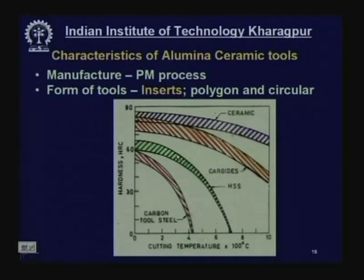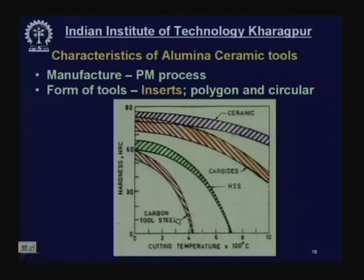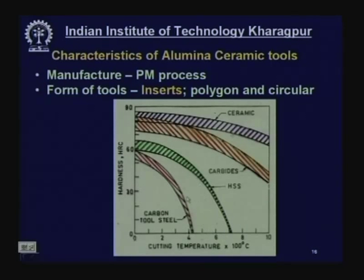Carbon tool steel — used before high speed steel — had good hardness at ambient temperature but fell rapidly with increase in cutting temperature, so it was not suitable for high speed machining and could be used only up to around 10 meters per minute. High speed steel showed a jump improvement — its hardness is retained much higher than carbon steel, but beyond 600°C the hardness falls so much that it cannot be used anymore.